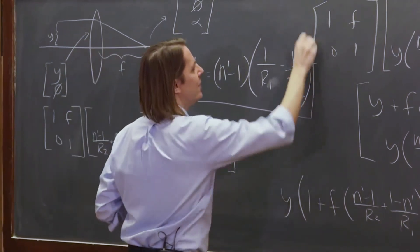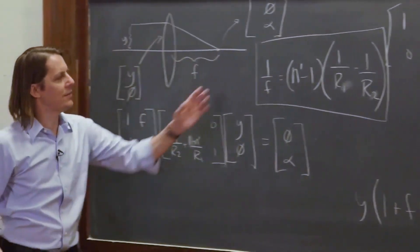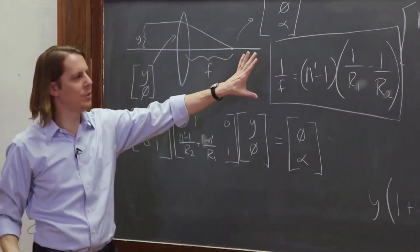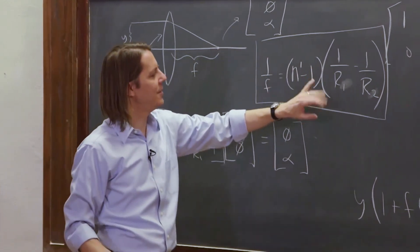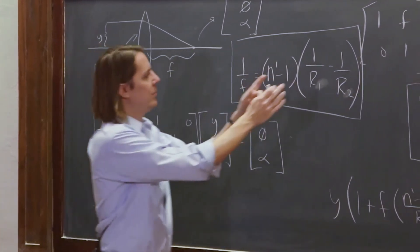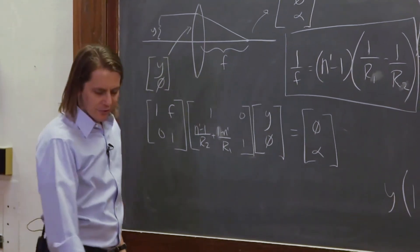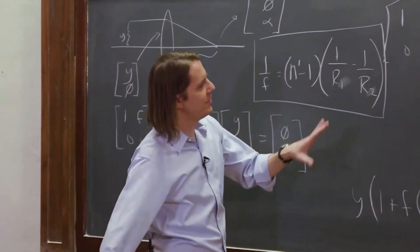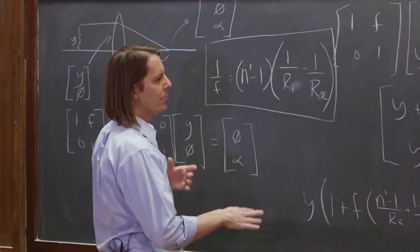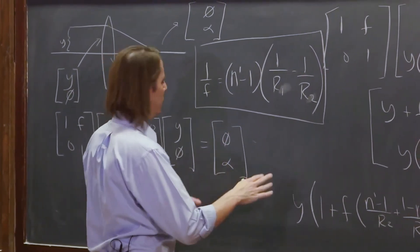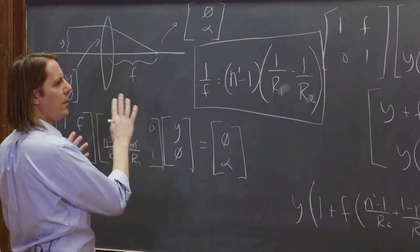In the end, the point is you get this, and that's the Lensmakers equation. That's what we derive from geometrical optics, that if you have a thin lens with these two radii and this index, that's what its focal length is.